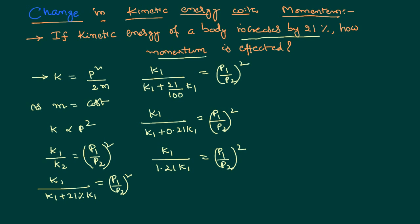We can cancel this k1 and k1. Therefore we can write that 1 by 1.21 equal to p1 by p2 whole square. Let us take the square root on both the sides.